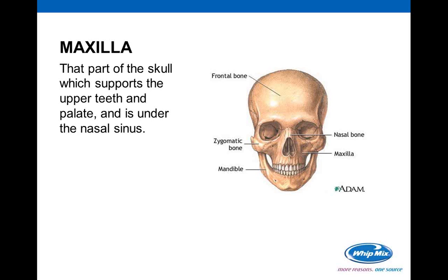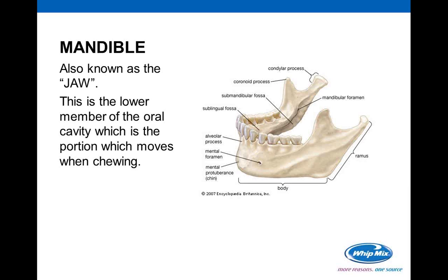The maxilla is that part of the skull that supports the upper teeth. It is not a mobile part of the head — we often lose track of that when moving the upper member of an articulator. The mandible, also known as the jaw, is the lower member of the oral cavity — the piece that moves when chewing and supports the lower teeth. The condylar process and how it fits into the fossa of the maxilla is what becomes most important when looking at jaw function.